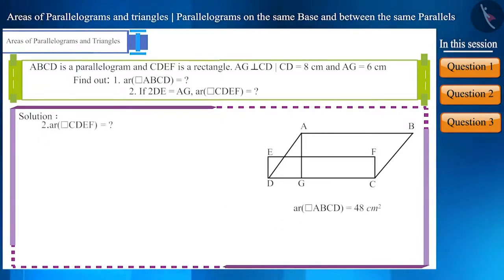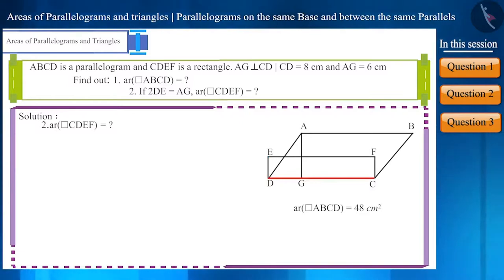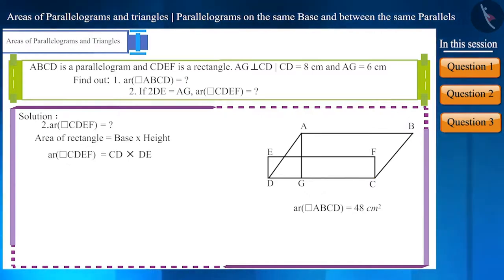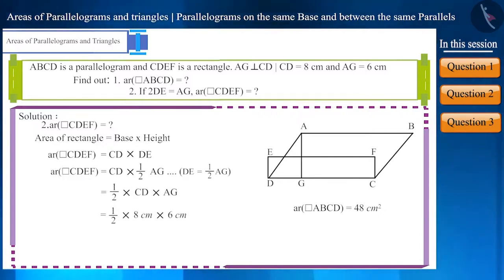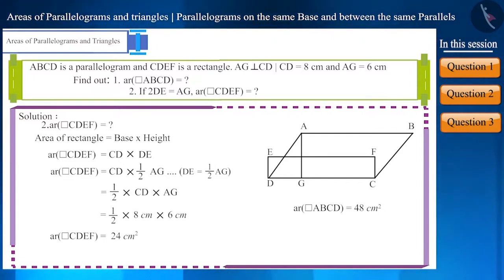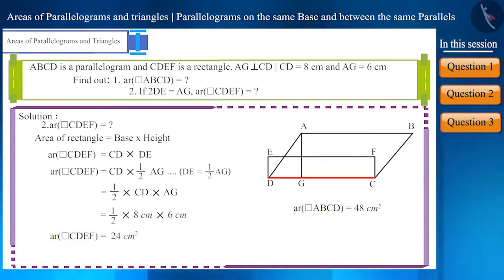Now for the second part: find the area of rectangle CDEF, where CD is the base and DE is the height. Since 2DE equals AG, we can write DE as ½ AG. Substituting the values, area of rectangle CDEF = CD × DE = 8 × ½ × 6 = 24 cm². We can see that the area of the rectangle is half the area of the parallelogram, because despite having equal bases, the height of the rectangle is half the height of the parallelogram.